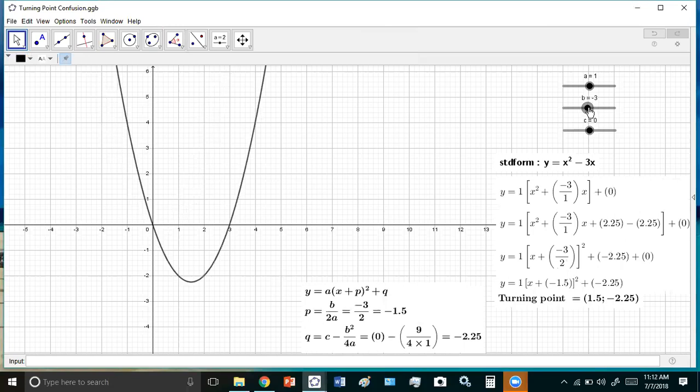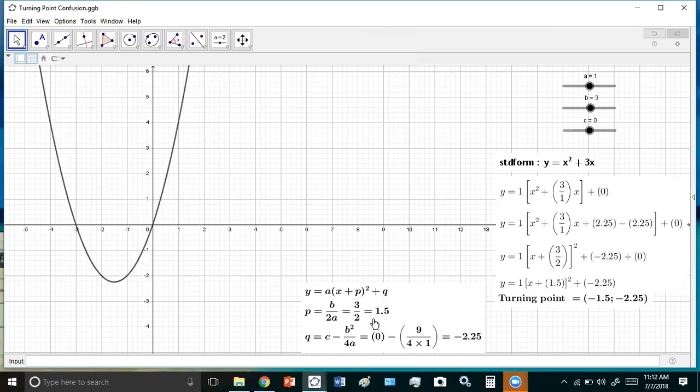we see that P, the value of P in this equation here is actually positive. But the turning point has a negative coordinate. Do you see that, you fucking moron? Do you see that?